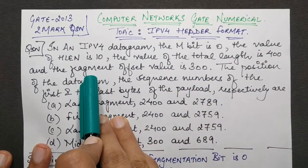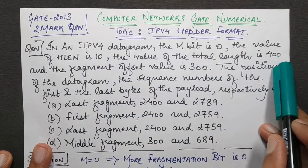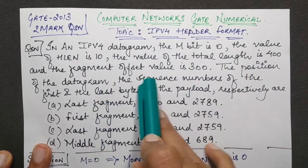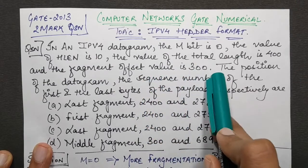Then they say the value of HLen is 10, the value of Total Length is 400, and the Fragment Offset value is 300.